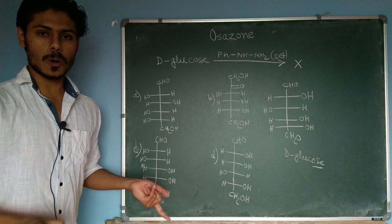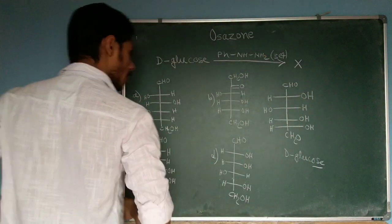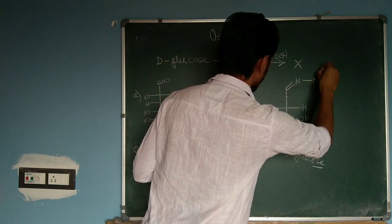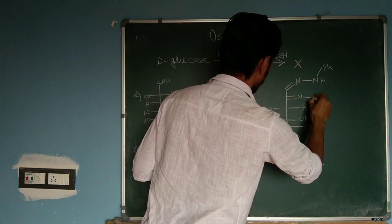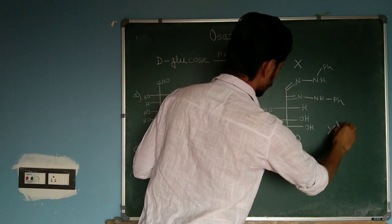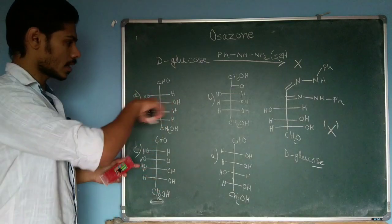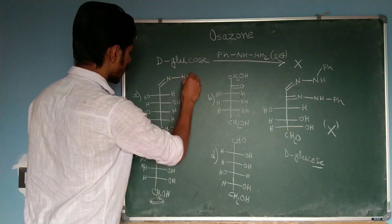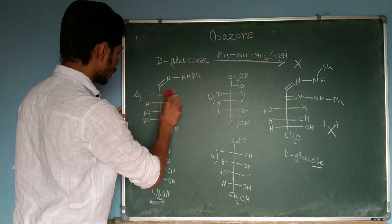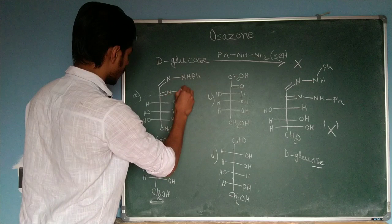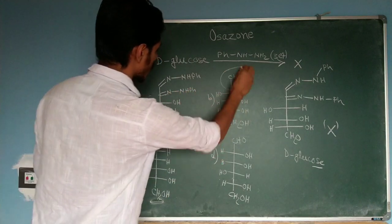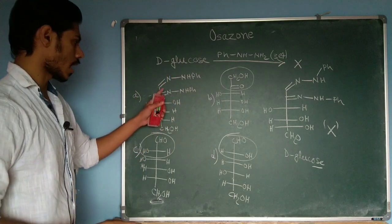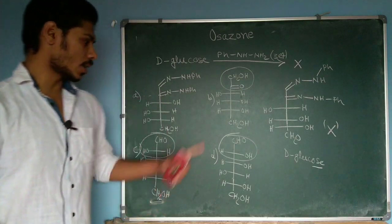Now, what will be the structure of the osazone formed from D-glucose? This is the structure of X — the osazone of D-glucose. For all four answer compounds, the C1 and C2 groups will be replaced by the two phenylhydrazone groups (=N-NH-Ph), while the remaining stereocenters are preserved.